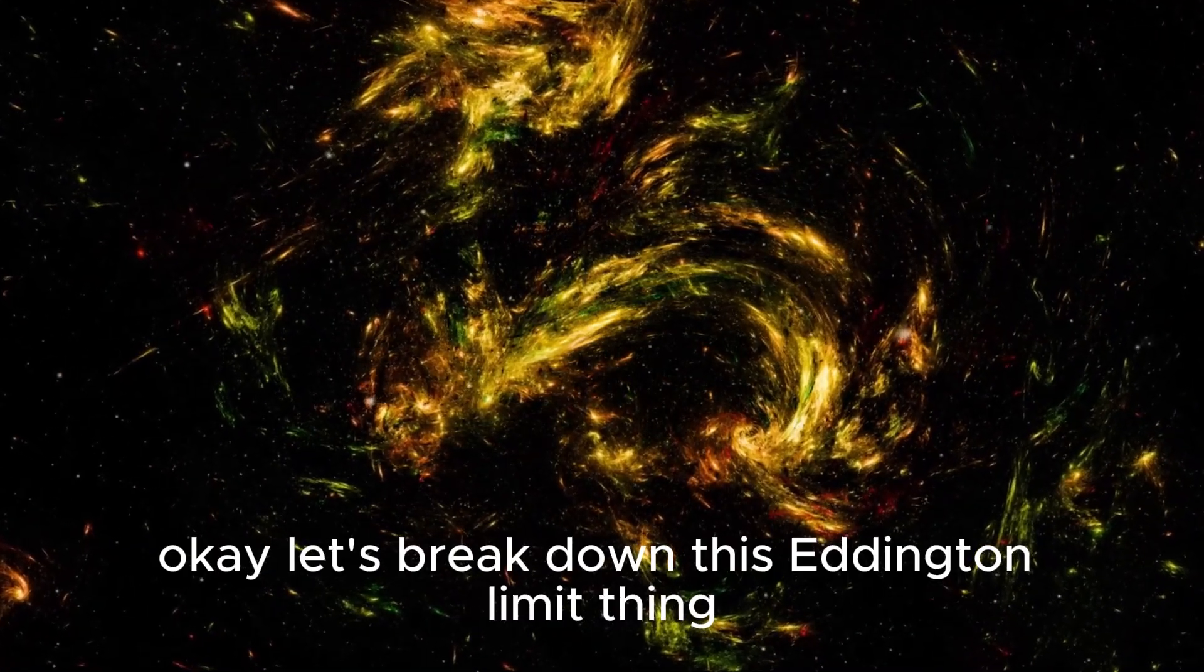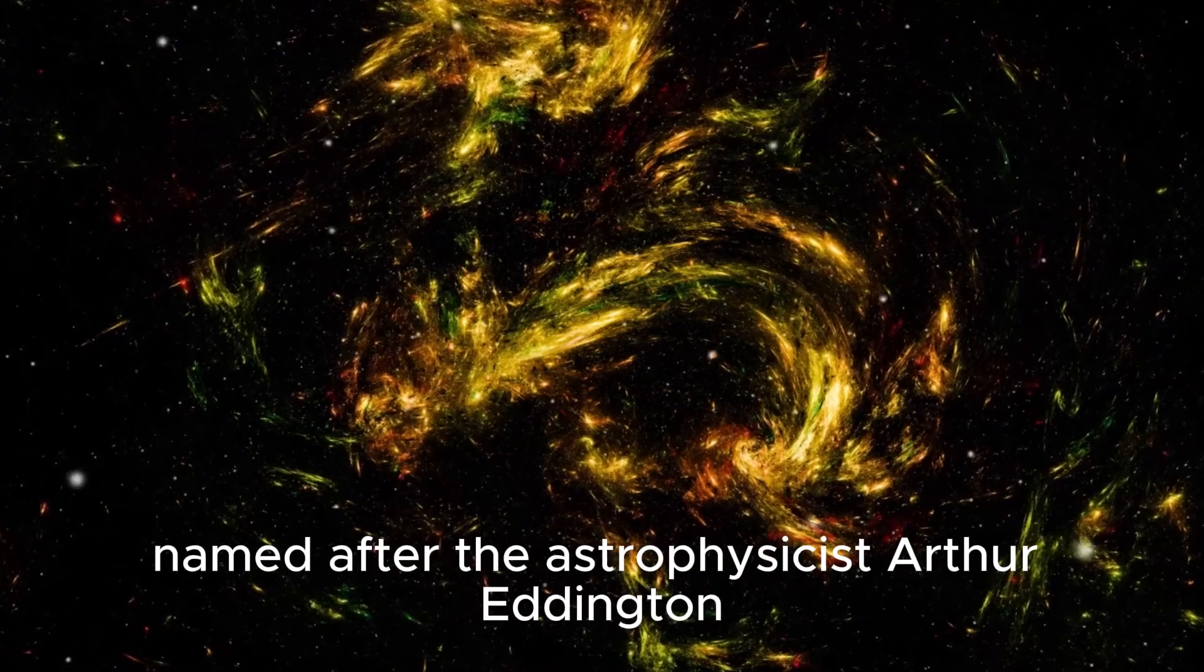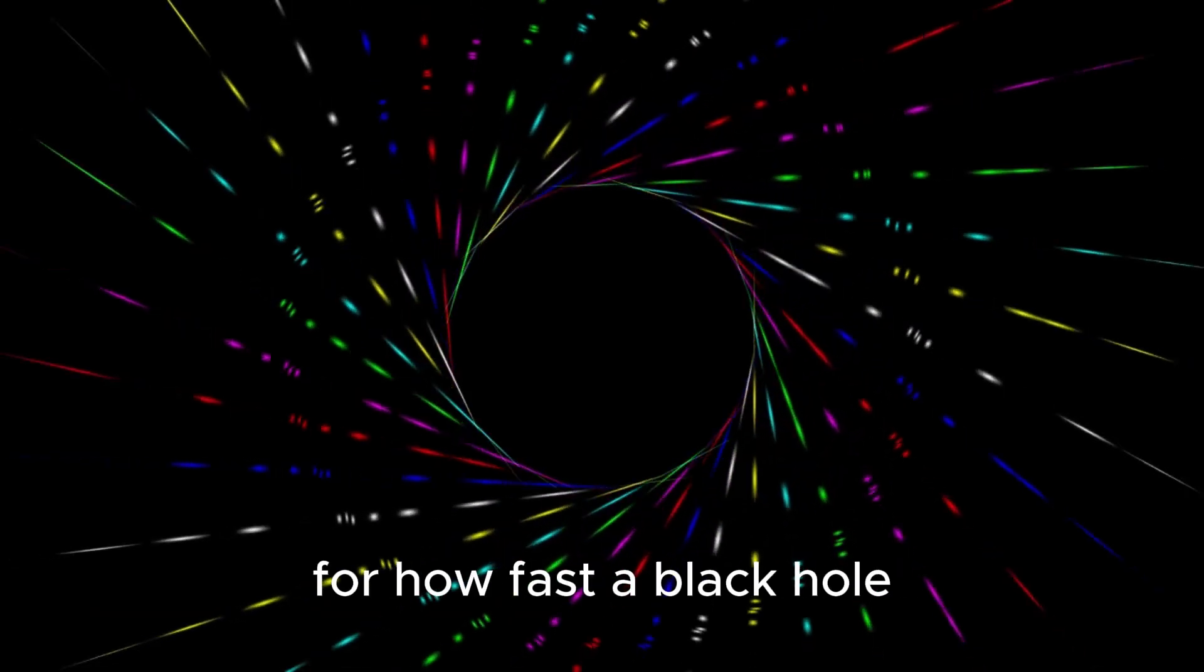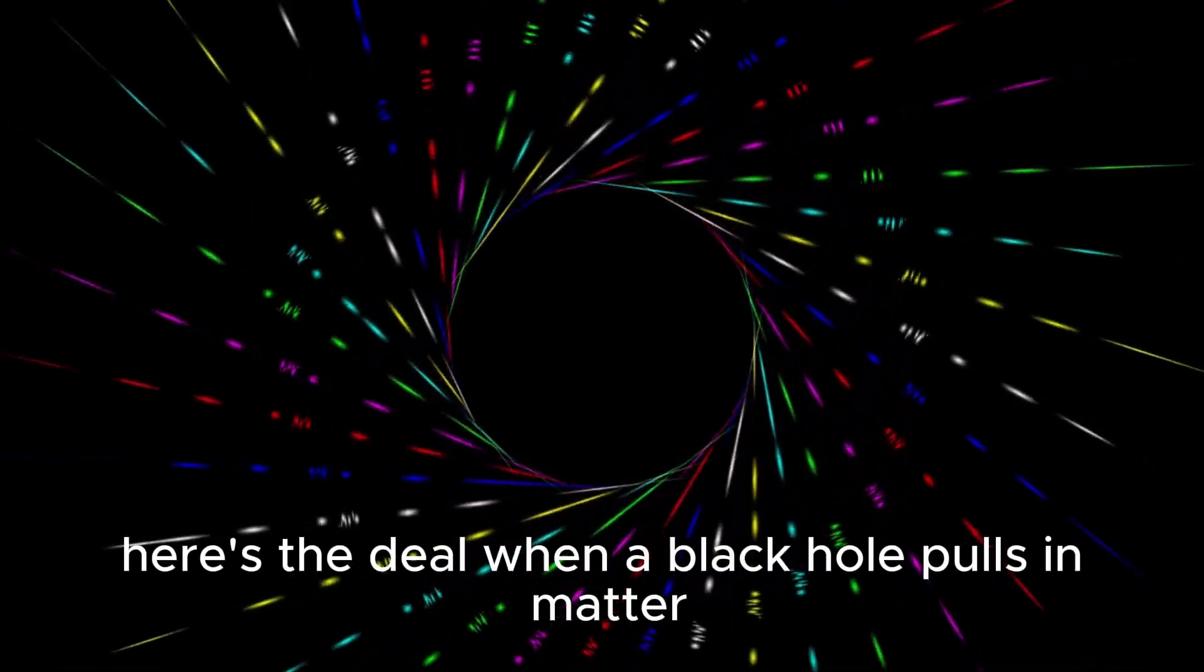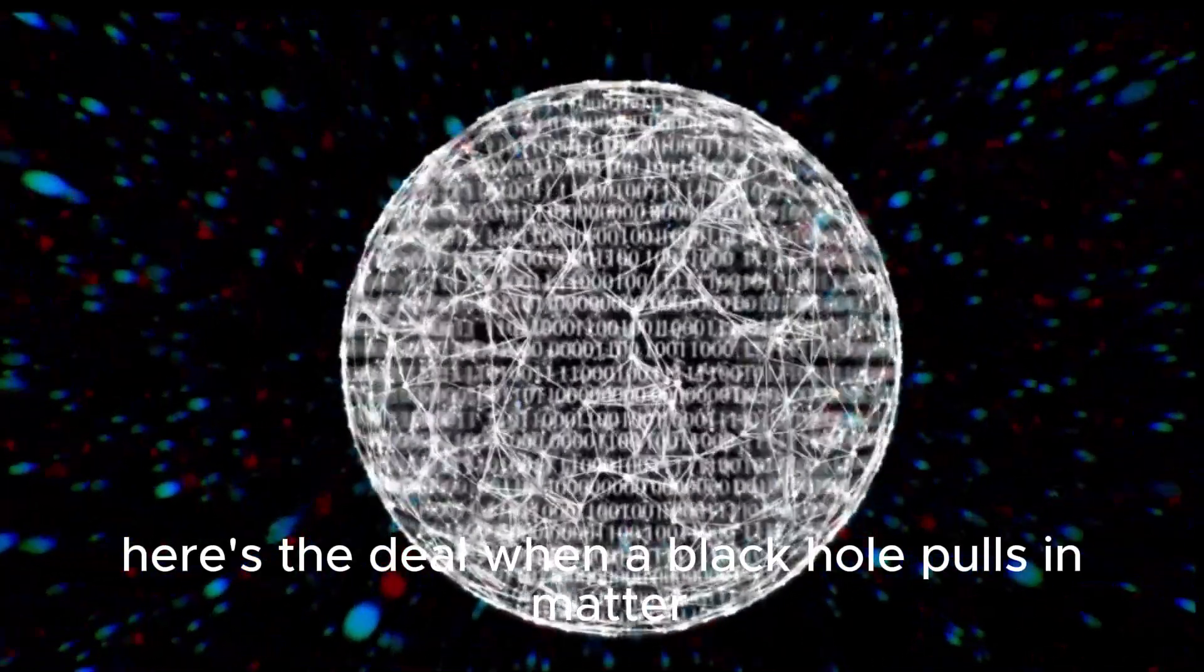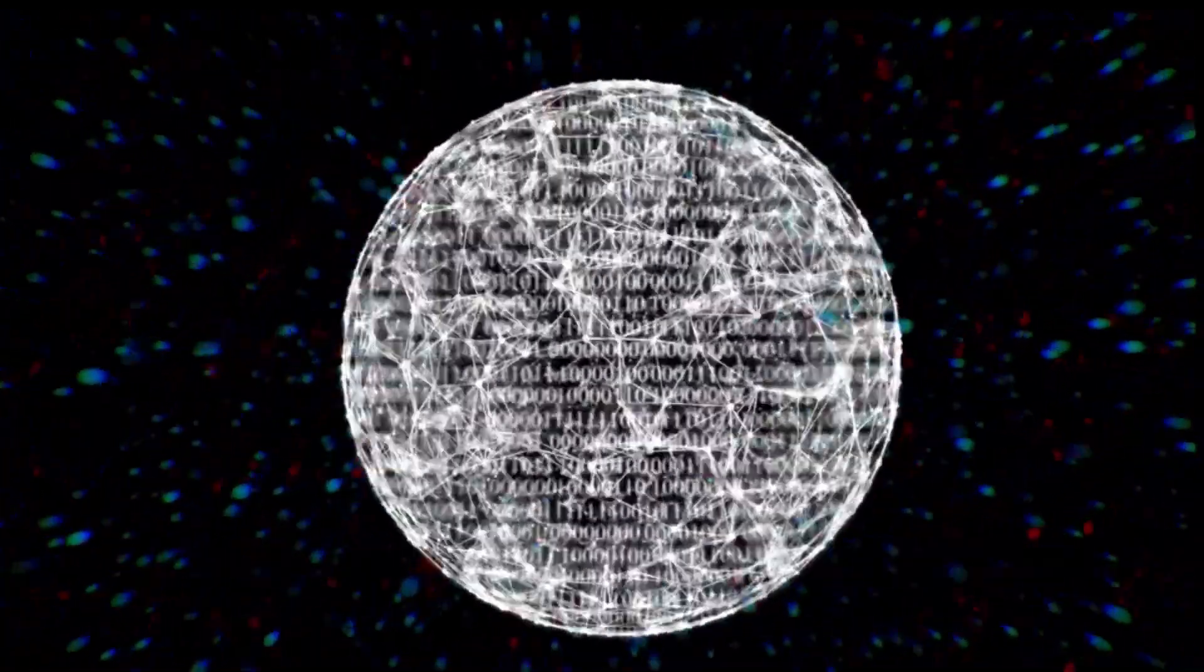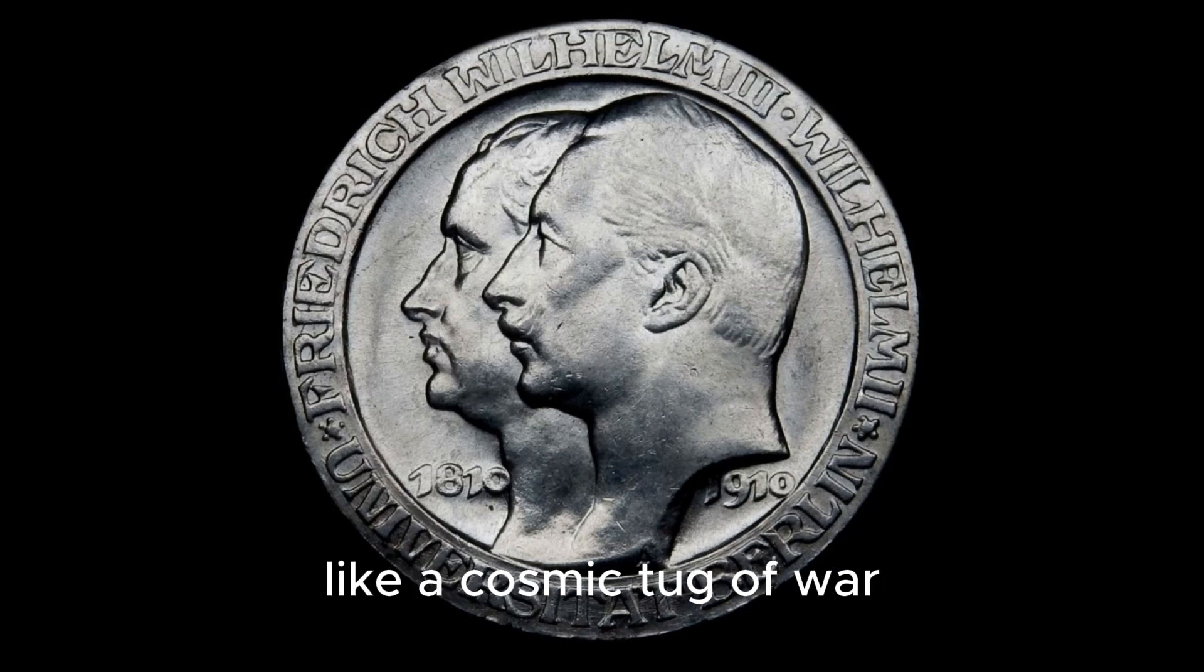Okay, let's break down this Eddington limit thing because it's super important. Named after the astrophysicist Arthur Eddington, it's like a cosmic speed limit for how fast a black hole or star can gobble up material. Here's the deal. When a black hole pulls in matter, the process generates intense heat and radiation. That radiation pushes back against the incoming material like a cosmic tug of war.